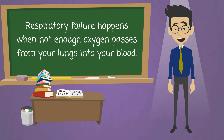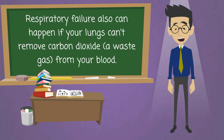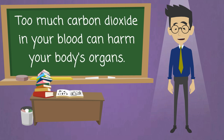Respiratory failure happens when not enough oxygen passes from your lungs into your blood. Your body's organs, such as your heart and brain, need oxygen-rich blood to work well. Respiratory failure also can happen if your lungs can't remove carbon dioxide, a waste gas, from your blood. Too much carbon dioxide in your blood can harm your body's organs.